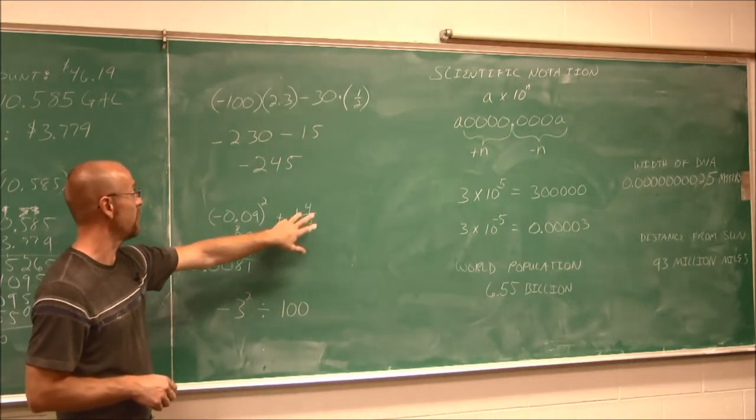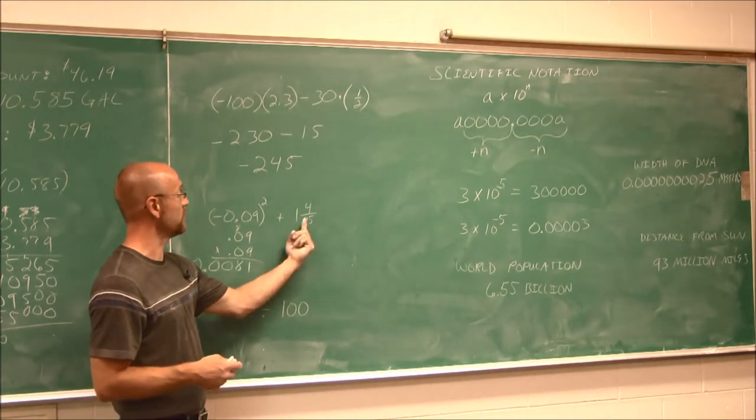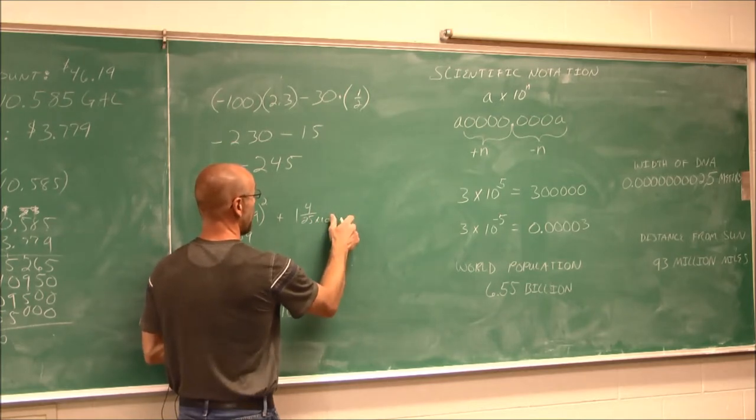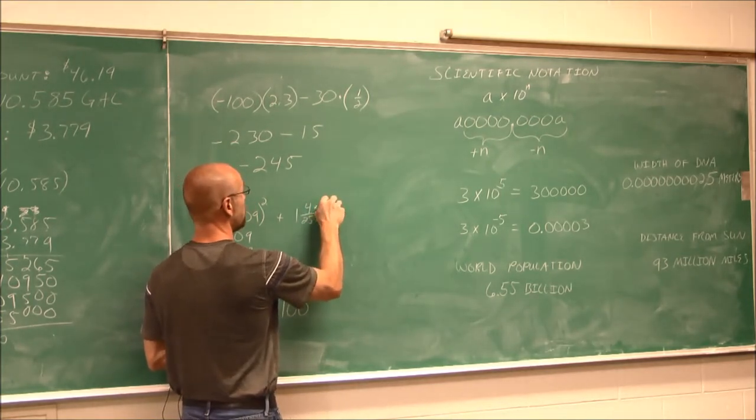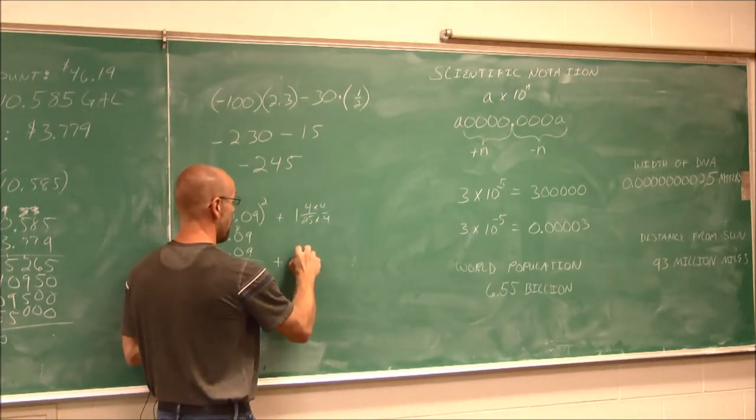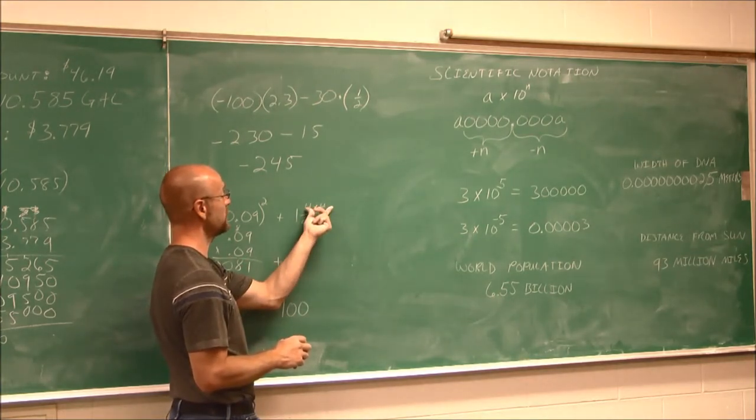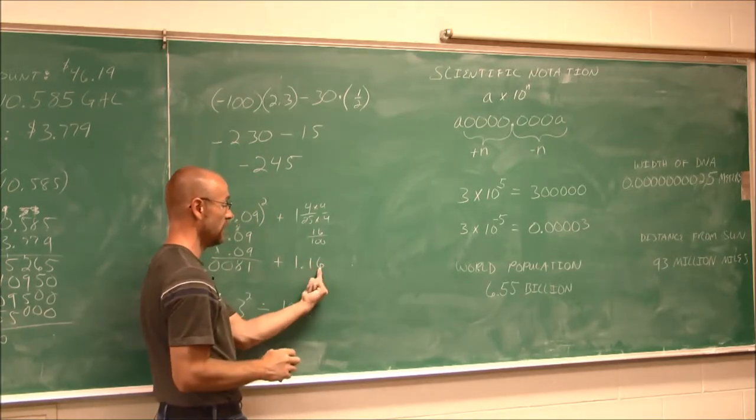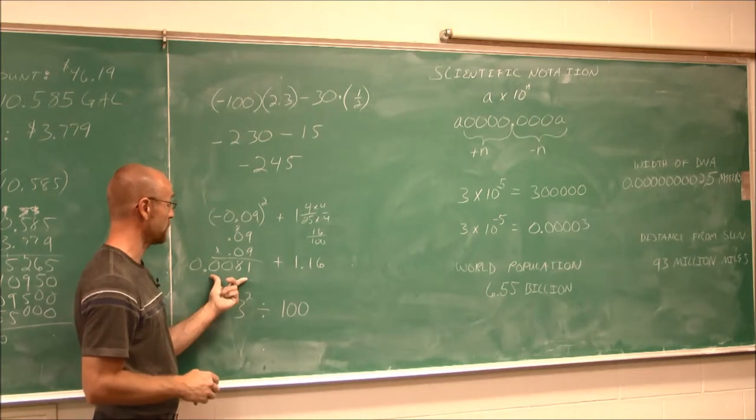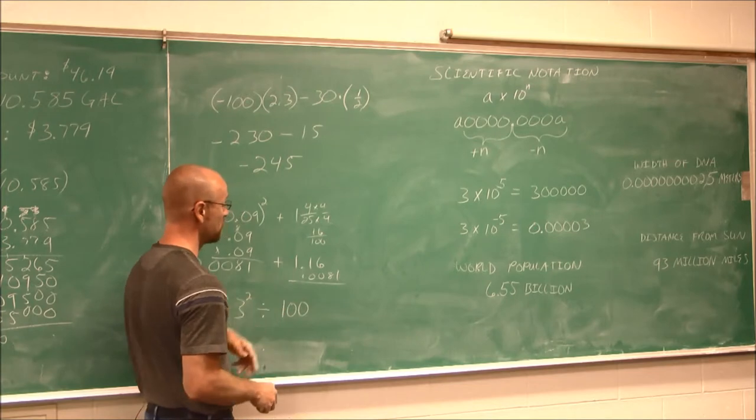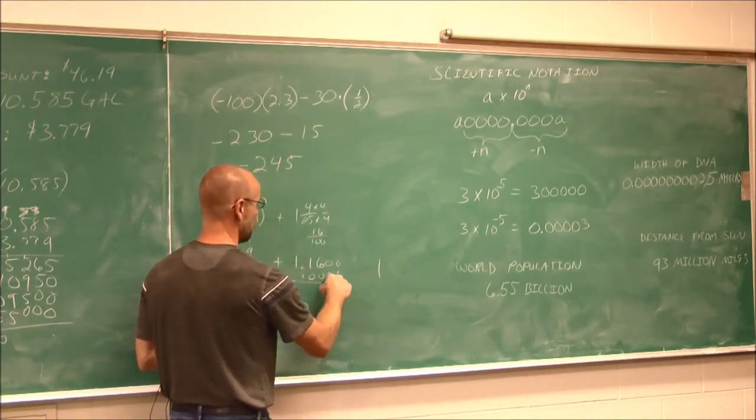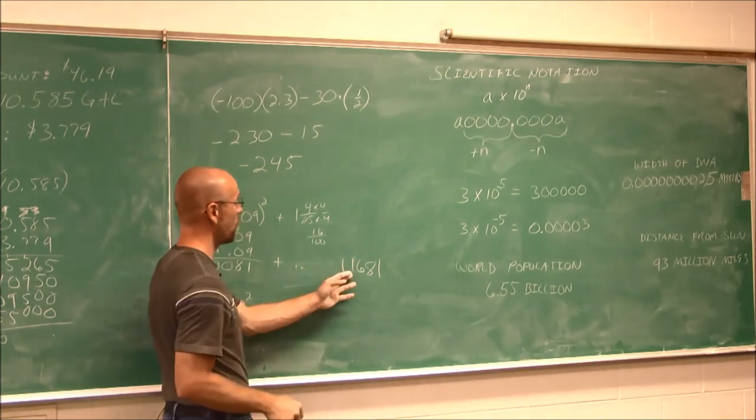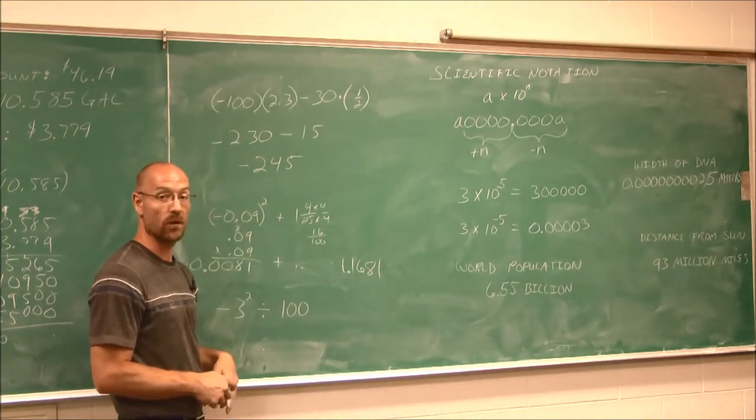Now I need to take this value and add it to this mixed number. Maybe I don't want a mixed number, so I have 4/25ths. Maybe I want that as a decimal. To have this as a decimal, I want to change this to some factor of 10. If I multiply 25 by 4, that'll give me 100. What I do to the bottom, I do to the top, so I have 1 and 16/100. 16 one-hundredths is 1.16. Now I can add these. I just line up their decimals, and we get 1.1681 as my decimal equivalent.